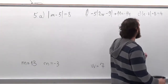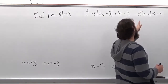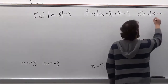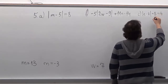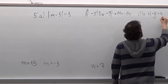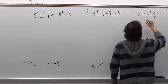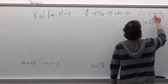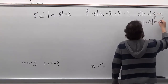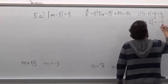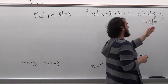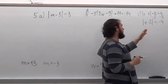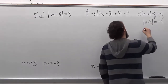So in this problem, once again, we want only the absolute value to be on the left side of the equation. So what we do is we subtract 8 from both sides. 8 minus 8 is 0, and 4 minus 8 is minus 4. And what we're left with is minus 4. And we know that absolute value cannot have a negative value, so this problem will not have a solution.